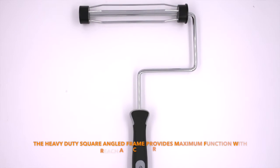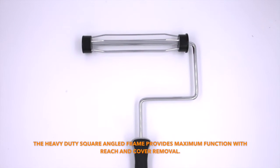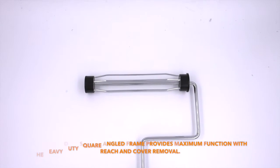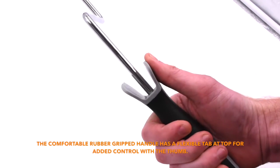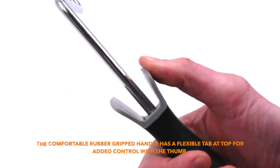The heavy-duty square-angle frame provides maximum function with reach and cover removal. The comfortable rubber-gripped handle has a flexible tab at top for added control with the thumb.